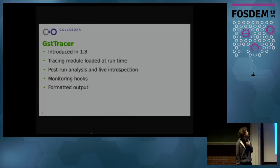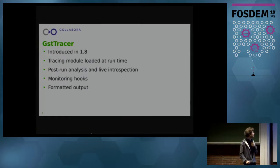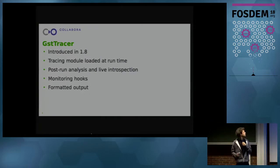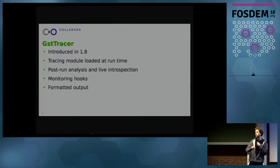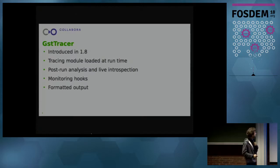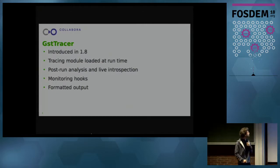GST tracer is a new mechanism which has been introduced in 1.8. It's meant to be used by debugging tools — that's the only purpose of this new system. It allows tracers to hook inside the internals of GStreamer core. By doing that, plugins can gather a lot of information about what's going on in the pipeline — for example, when a buffer is being pushed from one element to another. These tracers gather all this info and produce a formatted output meant to be easily parsed by external applications. It's been proved very useful so far.